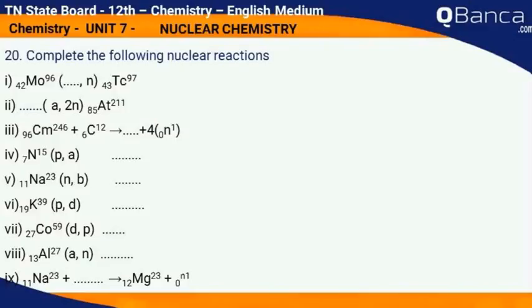vi) p, d gives Co-59-27; vii) d, p gives; viii) Al-27-13, alpha, n gives; ix) Na-23-11 plus dash gives Mg-23-12 plus n-0-1.